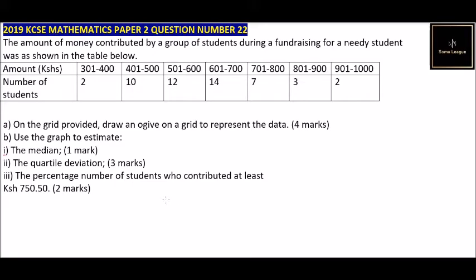Question number 22. We are told the amount of money contributed by a group of students during a fundraising for a needy student was shown in the table below. We have the row for amount in Kenya shillings. This is a grouped data, with ranges from 301 to 400, and the questions ask us to draw an ogive on a grid to represent the data.